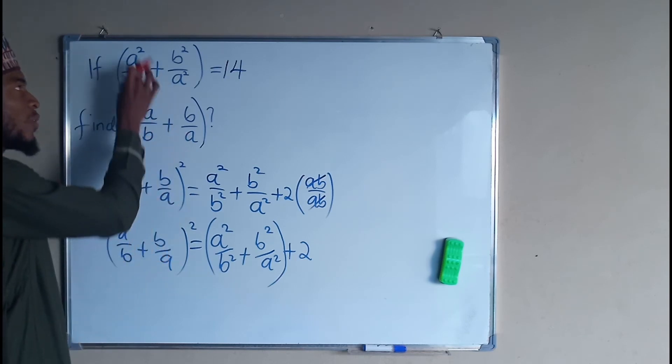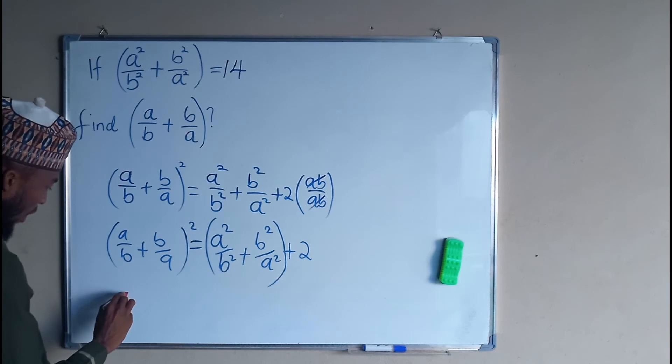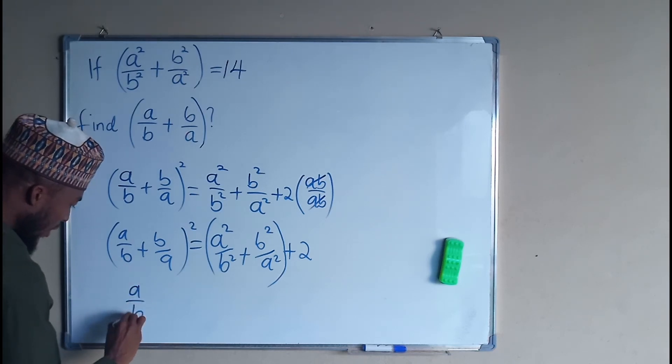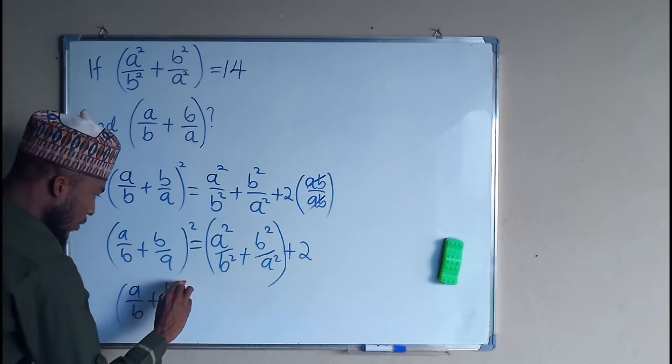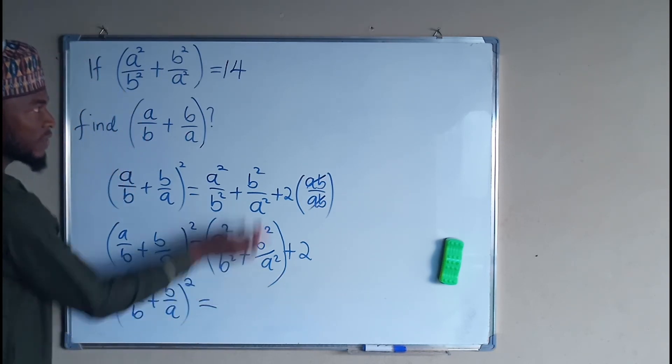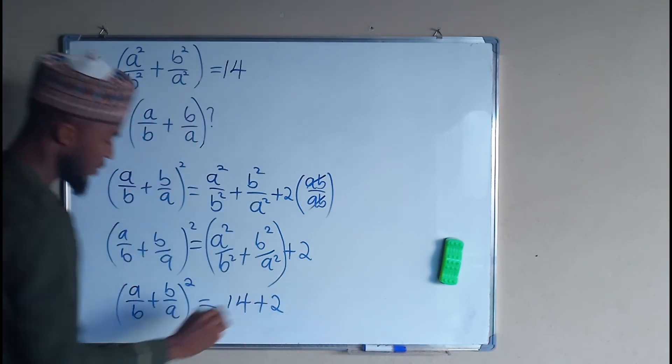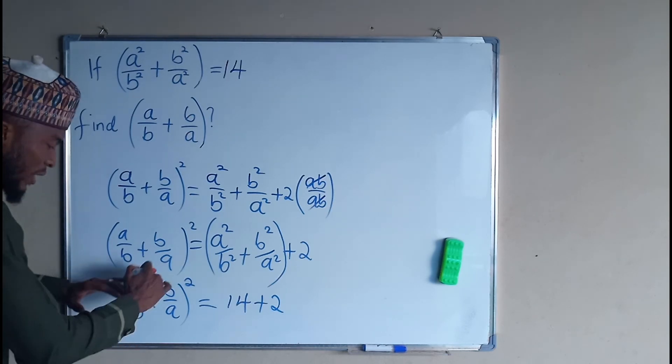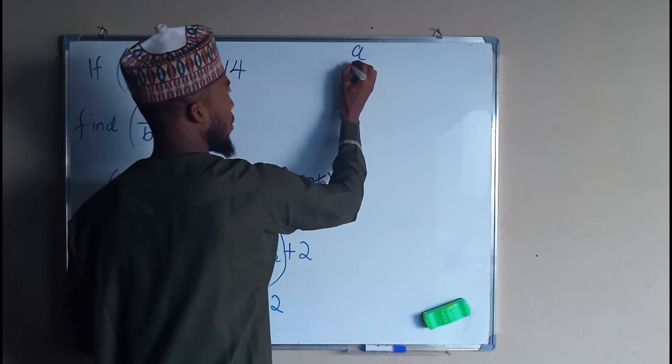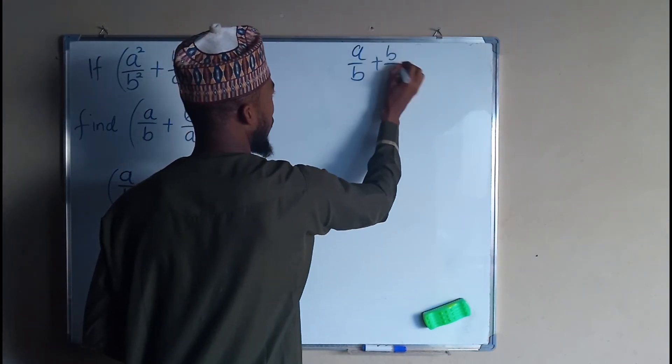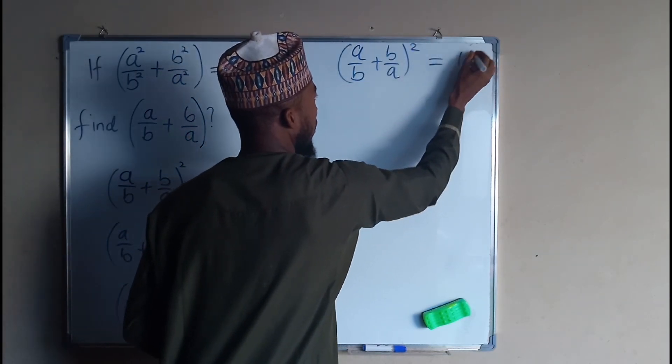Now you can substitute the value of this quantity, which equals 14, into this equation. So we have (a/b + b/a)² equals 14 plus 2, which gives us 16. Therefore (a/b + b/a)² equals 16.